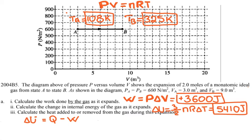I usually advise students not to memorize whether to put a positive or negative sign on work based on the textbook convention. Instead, always think about what is physically happening to the gas and how that affects its energy — then assign the sign accordingly.